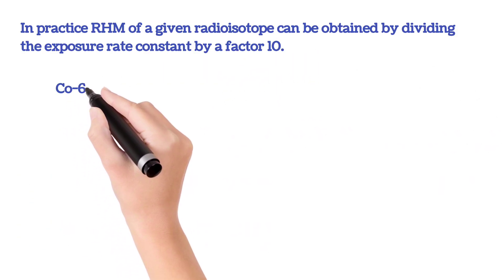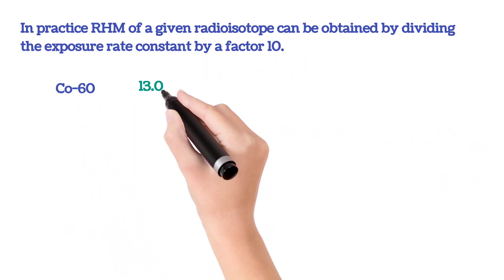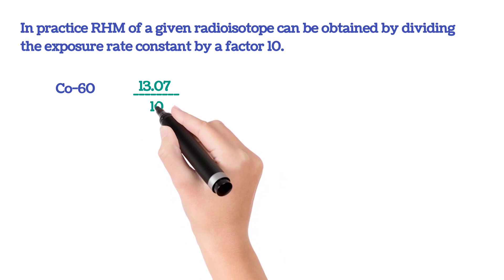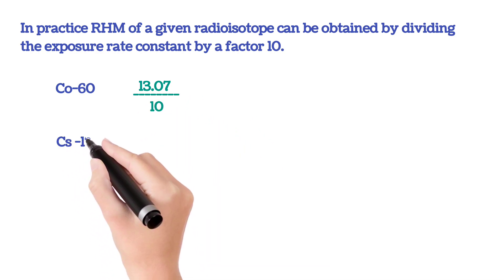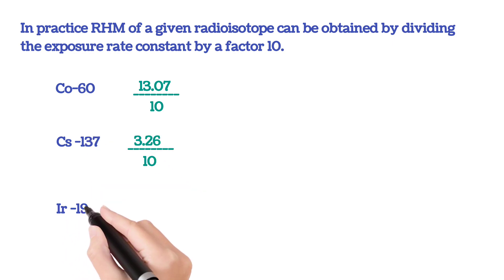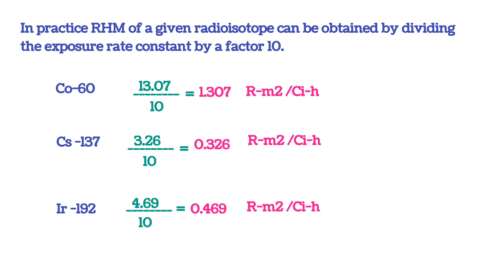In practice, RHM of a given radioisotope can be obtained by dividing the exposure rate constant by a factor of 10. This means we can find the value of RHM if exposure rate constant of a radioisotope is given.